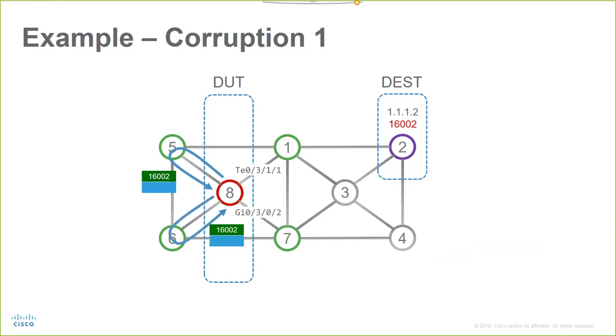In this case, router 8 will send test traffic towards router 1 with the wrong label, 16,999. And assuming that 16,999 is not a label present on node number 1, node 1 will send an LSP echo reply with a corresponding error code.